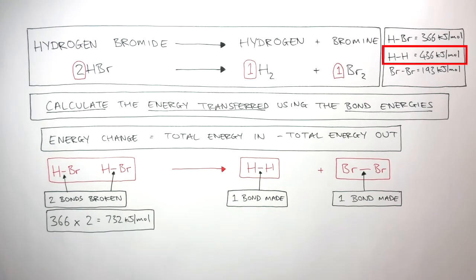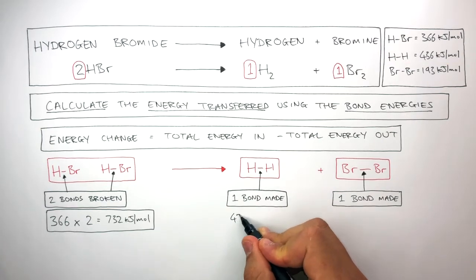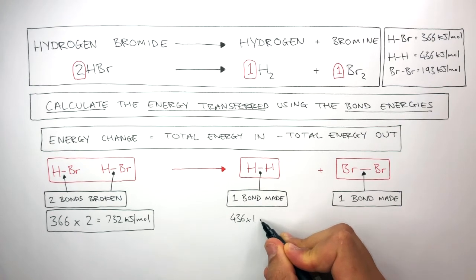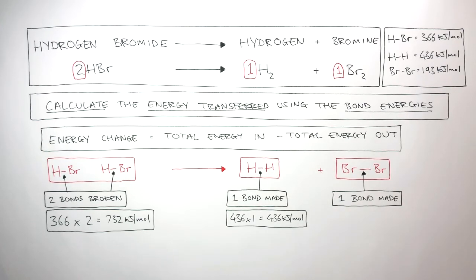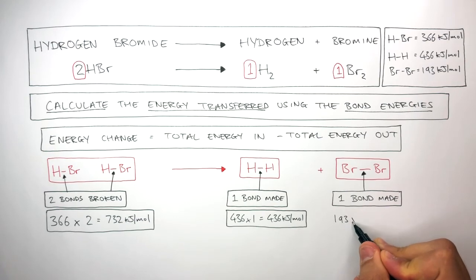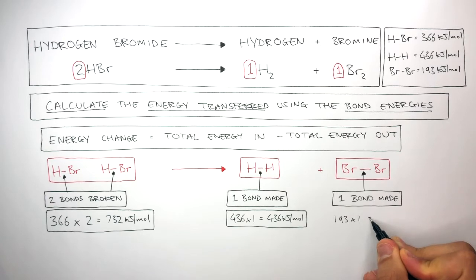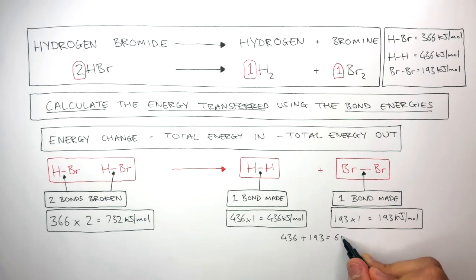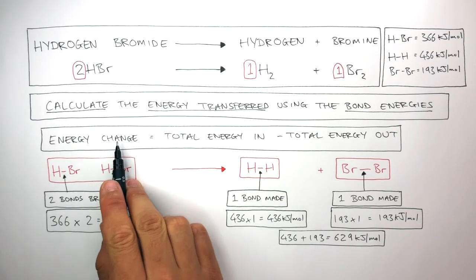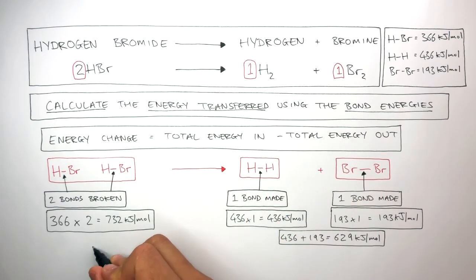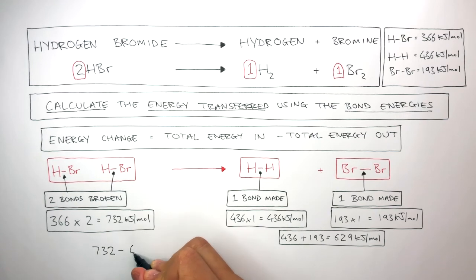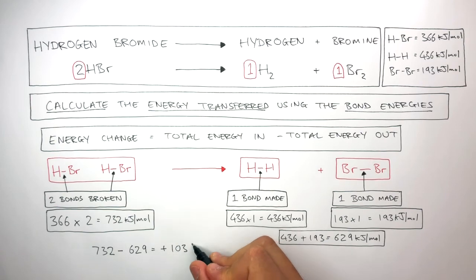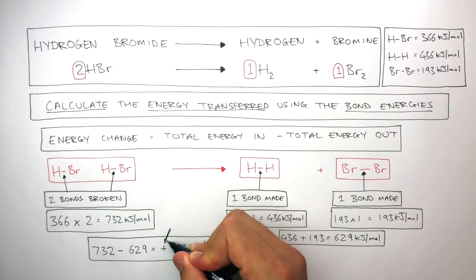The H-H bond energy is 436 kilojoules per mole, so we write 436 times 1 as there is only one bond made — this equals 436 kilojoules per mole. The Br-Br bond energy is 193 kilojoules per mole, so we write 193 times 1 as there is only one Br-Br bond made — this equals 193 kilojoules per mole. The total energy out equals 436 plus 193, which equals 629 kilojoules per mole. Energy change equals 732 take away 629, which equals plus 103 kilojoules per mole. The positive sign means this is an endothermic change.